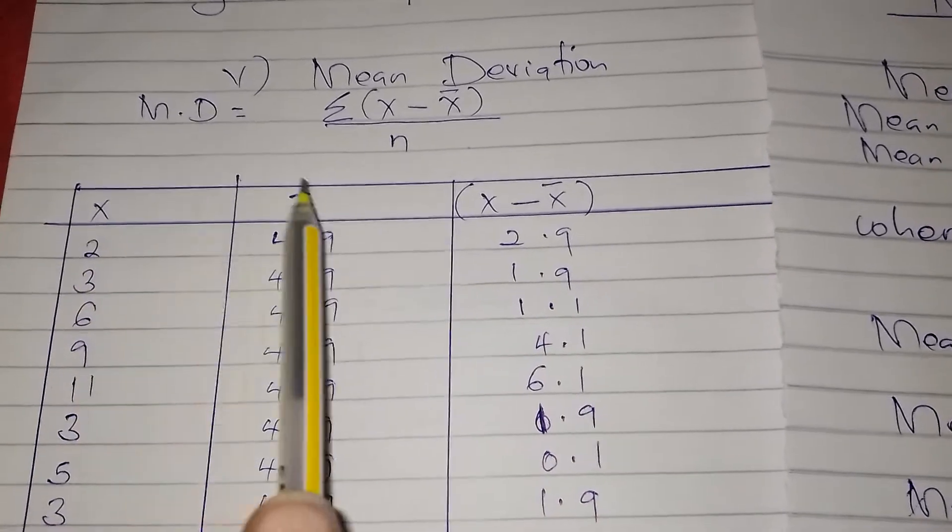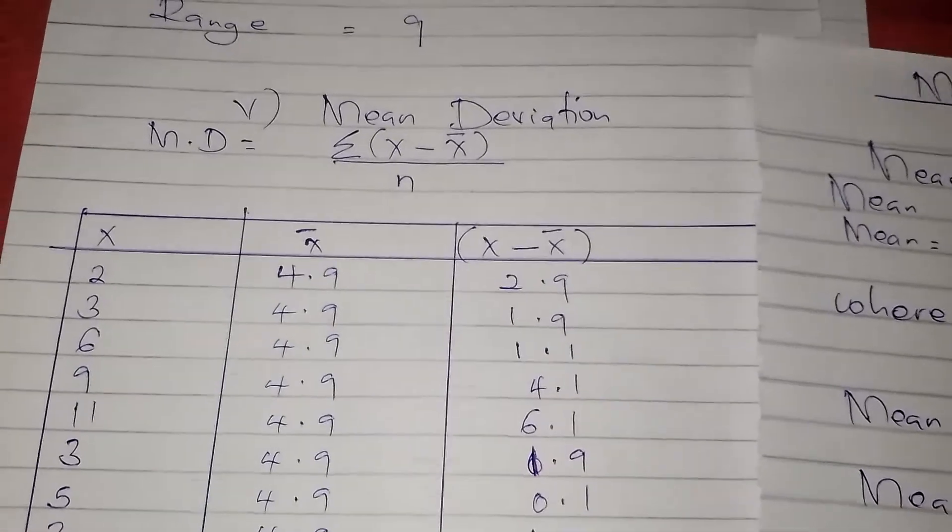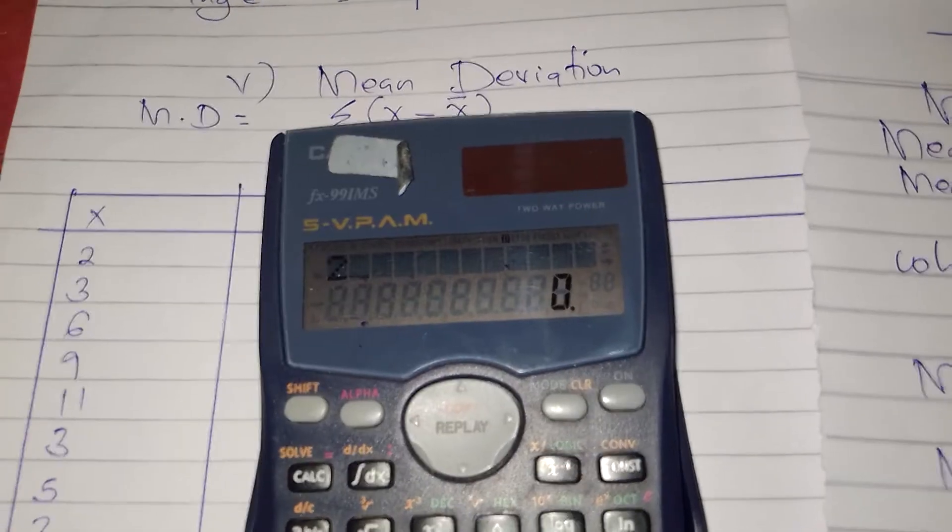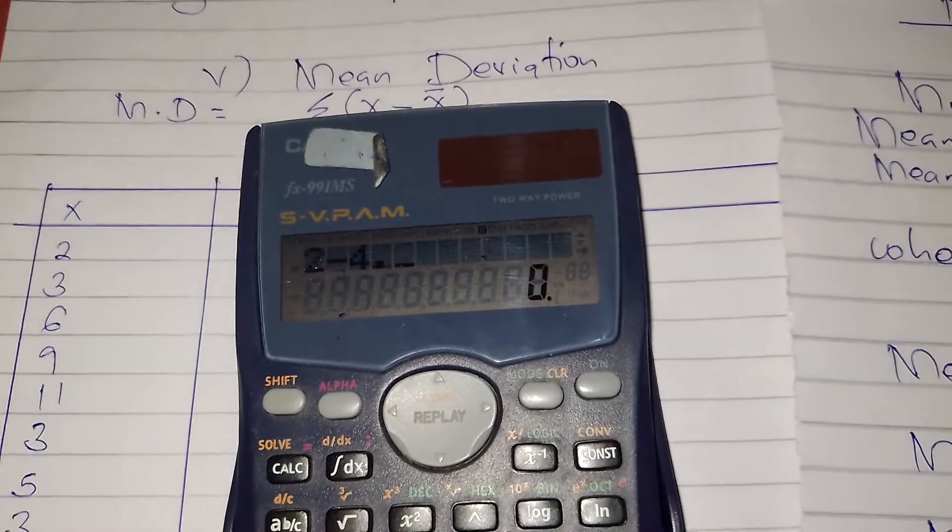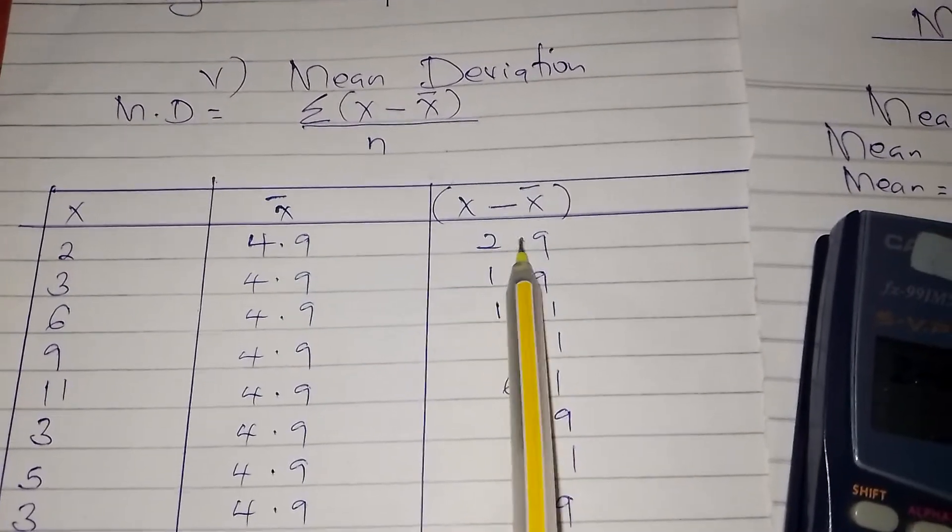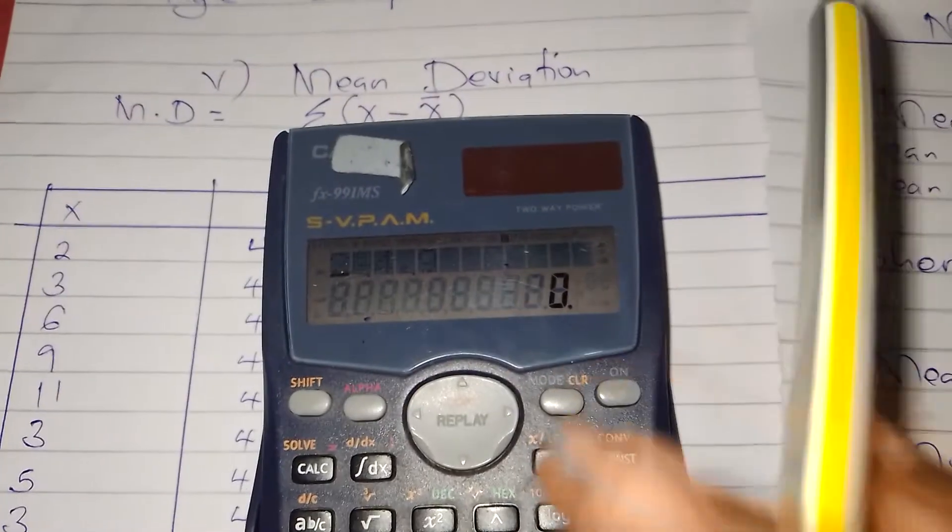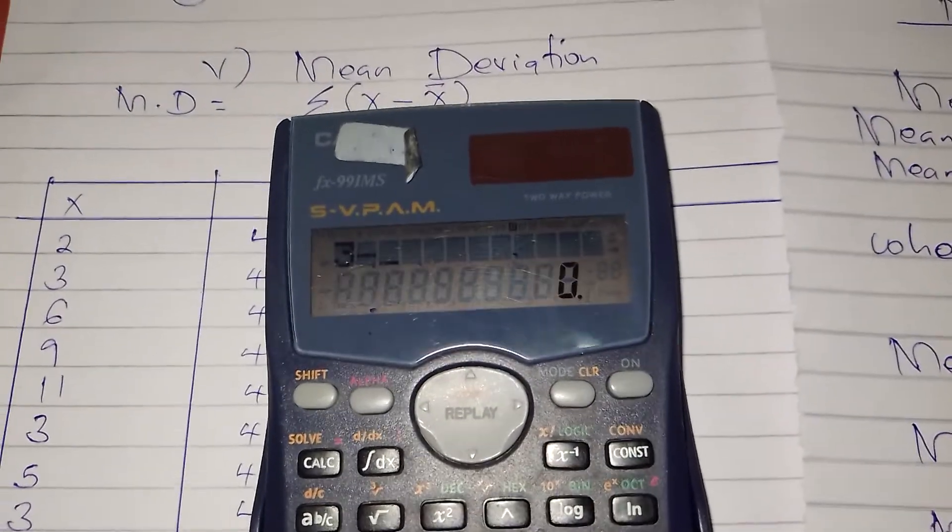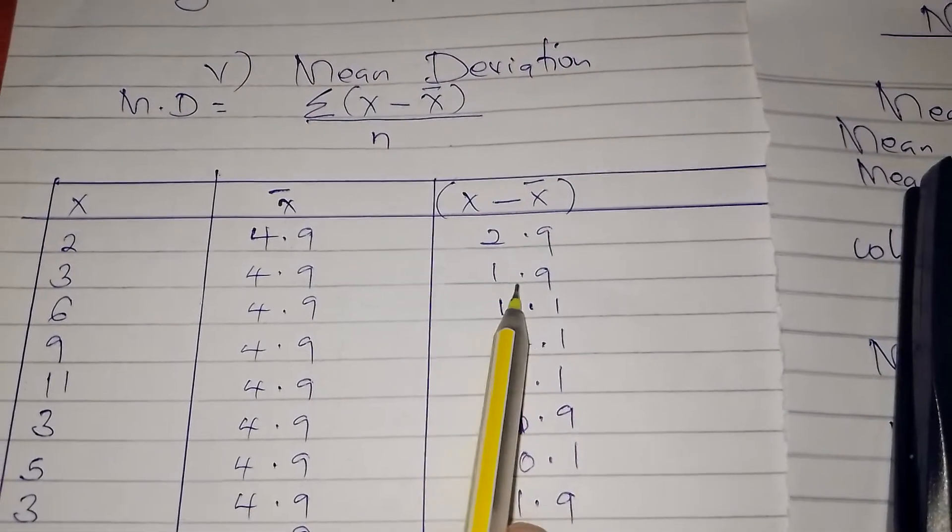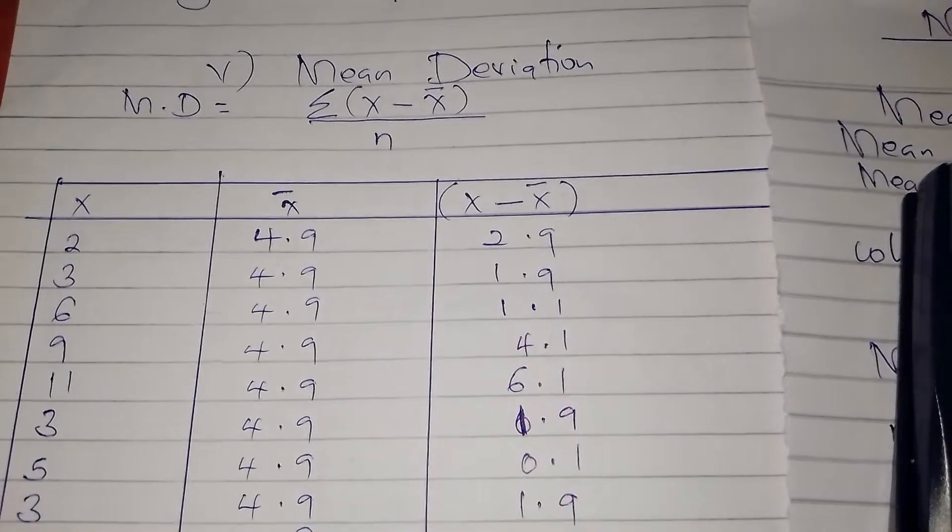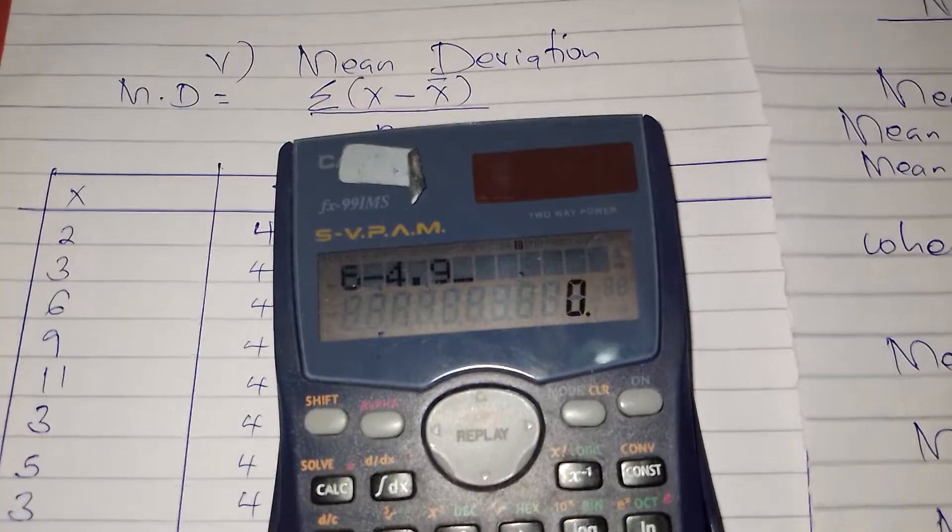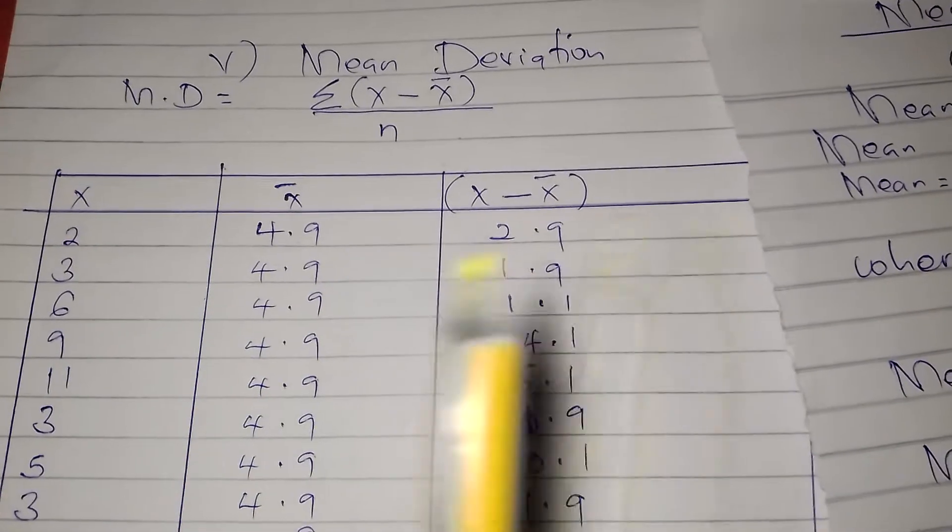Then this is X minus X bar. So we shall do X minus X bar for all the figures. The first figure is 2 minus 4.9, which is negative 2.9, but we ignore the negative. Then the next is 3 minus 4.9, which is negative 1.9. We ignore the negative. The next is 6 minus 4.9, which is 1.1. Like that, we do the same thing for all the figures.